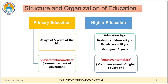Regarding the structure and organization of education: there are two different types — primary education and higher education. Primary education started at the age of five years and was mostly organized in the family. A ritual called Vidyarambha Samskar marked the commencement of education. Higher education was mostly organized in gurukul schools. The admission age for Brahmin children was eight years, Kshatriyas ten years, Vaishyas twelve years, and Shudras were deprived of education. A special ritual called Upanayana Samskar was performed at the time of admission to higher education.